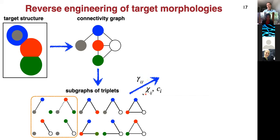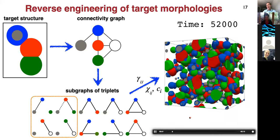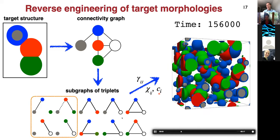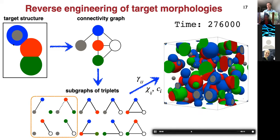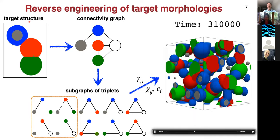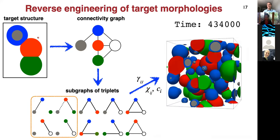Of course, in the simulations I don't put in surface tensions directly but rather interaction parameters and concentrations. In general there is still a non-trivial step to go from surface tensions to interaction parameters. In the Flory-Huggins model, we were able to do this in some regime. We can also tweak concentrations to get the right volume fractions. Here is the final morphology — going through this procedure, it indeed looks similar to the target structure we started with.